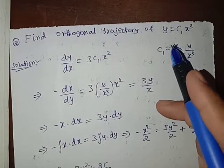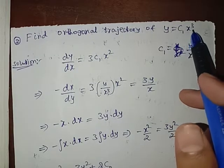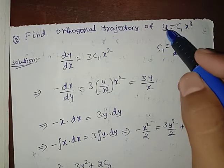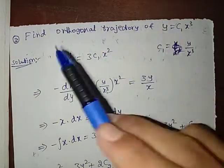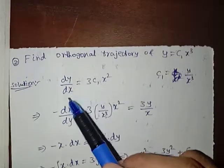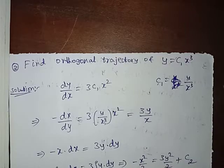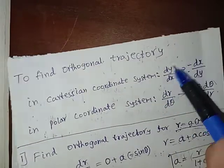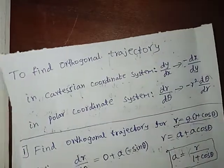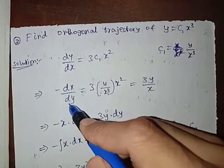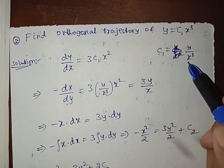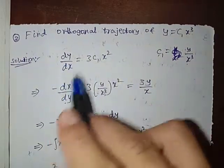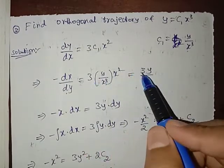The next problem: find the orthogonal trajectory of y = c₁x³. We can write c₁ = y/x³. Differentiating y with respect to x gives dy/dx = 3c₁x². To find the orthogonal trajectory in Cartesian coordinates, we replace dy/dx with minus dx/dy, and substitute c₁ = y/x³, giving minus dx/dy = 3(y/x³)x² = 3y/x.